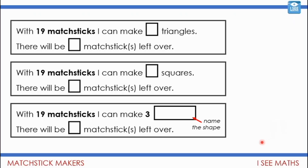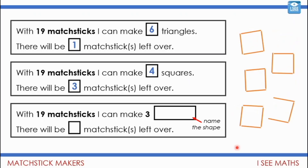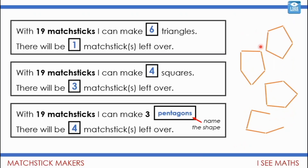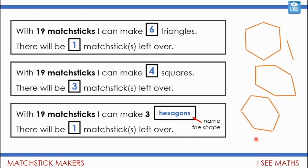Okay, let's have a look. Triangles: six lots of three is 18, then one left over matchstick makes 19 — so six triangles, one left over. Squares: four lots of four is 16, so there'd be three left over, not quite making that fifth square. Now which shapes can I make three of? Using pentagons: three lots of five is 15, plus four more is 19 matchsticks — so three pentagons with four matchsticks left over. But it could also be hexagons, because three lots of six is 18, with one matchstick left over, making 19.